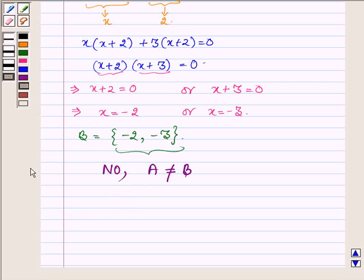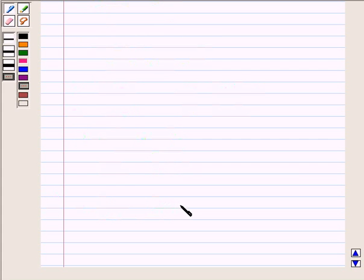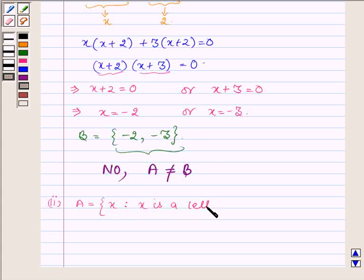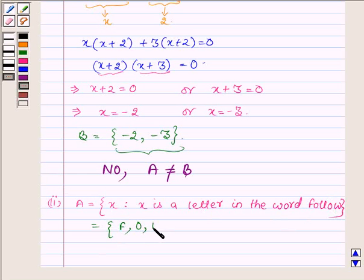Now proceeding to the next part where A is the set of x such that x is a letter in the word 'follow'. That is, A contains all the letters in the word 'follow', which are F, O, L, and W. So A is the set containing F, O, L, and W.